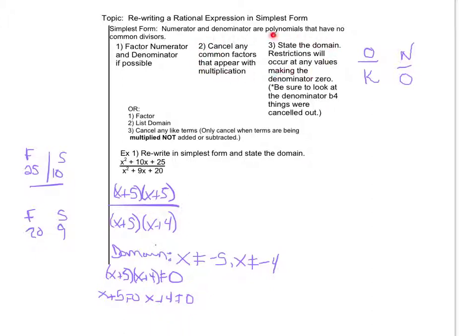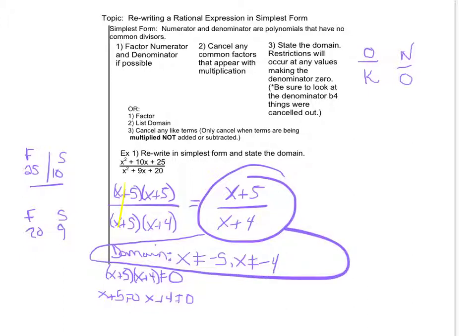So notice it may not be a bad idea to swap 2 and 3 up here. So I'm listing the domain and then I'm canceling. Now from here I'm going to cancel my x plus 5 and that's going to leave me the simplest form of x plus 5 over x plus 4. So here's my simplest form and here is my domain.